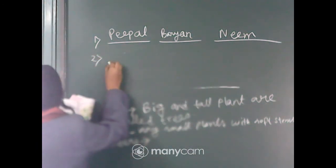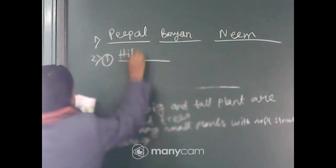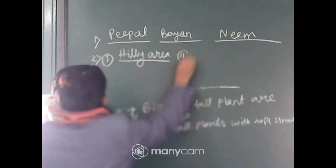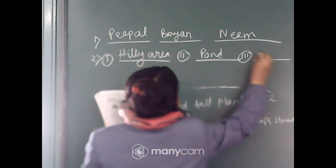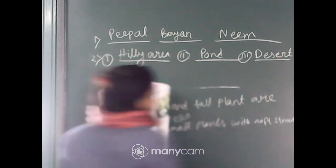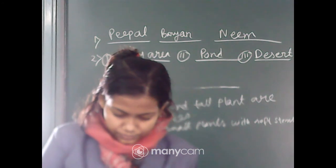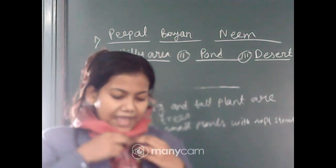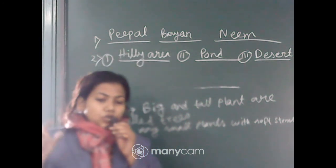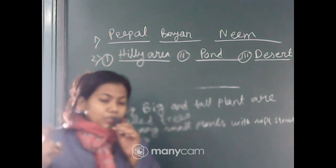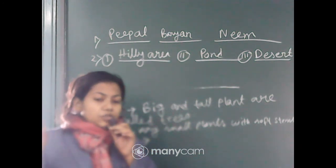Plants grow in different places. Number one: pine trees grow in hilly areas. Number two: lotus grows in a pond. Number three: cactus grows in the desert area.